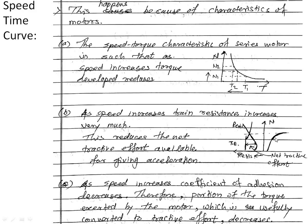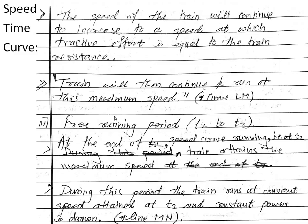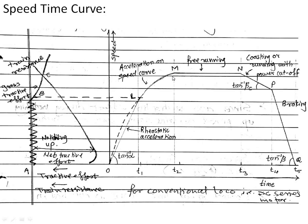This acceleration decreases up to the point where tractive effort equals train resistance, and at this point the train speed is constant. Third is the free running period, T2 to T3, shown as straight line MN. At the end of the acceleration curve at point M, the train continues to run at this maximum speed. During this period, the train runs at constant speed attained at T2, and constant power is drawn. This is called the free running period.